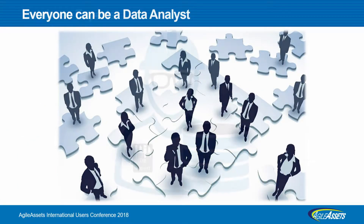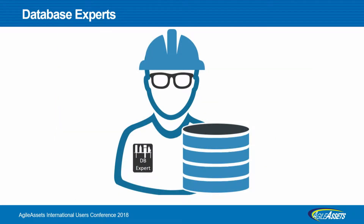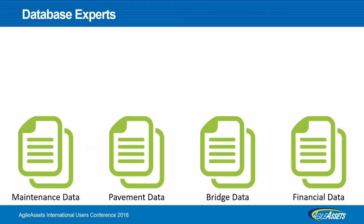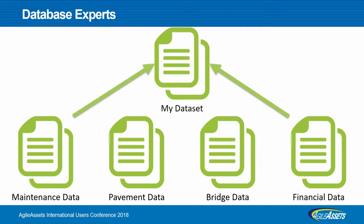What I mean by that is we can separate the tasks — the DB expert tasks — so the people that know that, that's their job. Agile Assets does that, and they can get that data into Summit. Then you've got these datasets, and you can explore your maintenance data, your bridge data, maybe bring in some financial data. You can even combine those datasets into a larger dataset, and we'll see some of that in the demonstration.